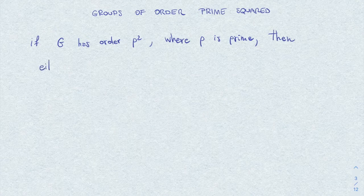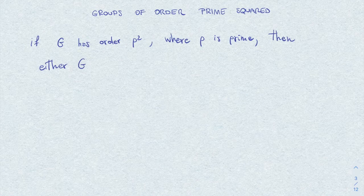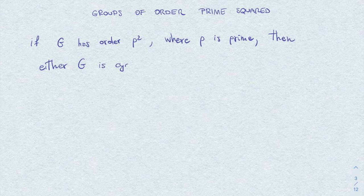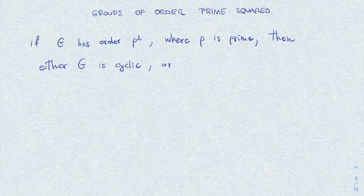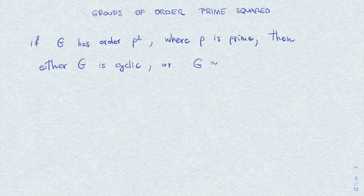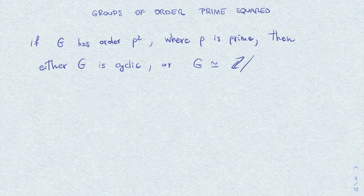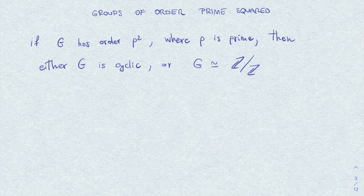then either G is cyclic, or G is isomorphic to the direct product of two copies of Z_p.